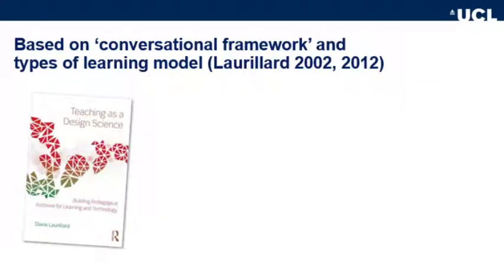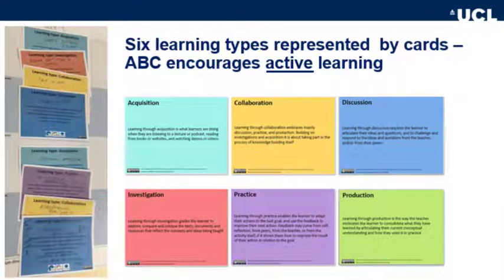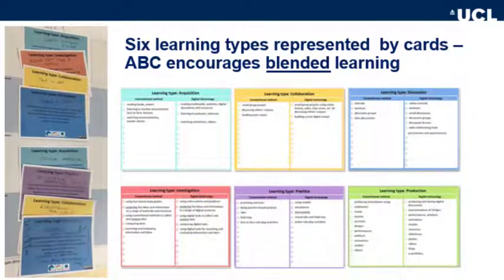Behind ABC is a pedagogical framework called the Conversational Framework, developed by Professor Diana Laurillard of UCL's Institute of Education. What we've done is operationalised her theories by focusing on the types of learning she identified, which become the building blocks of a course design. Learning is represented by six types of activities, and five of those are what you might call active learning, so there's a real focus on active learning and a move away from passive acquisition.